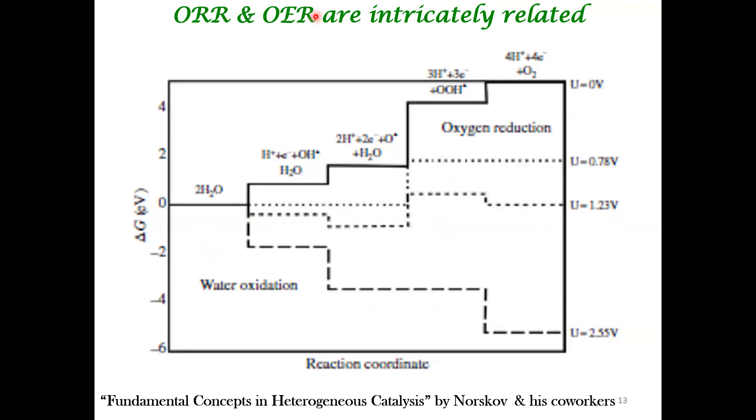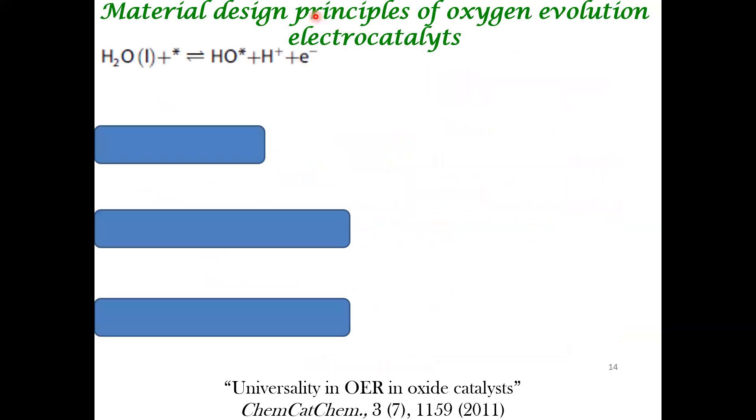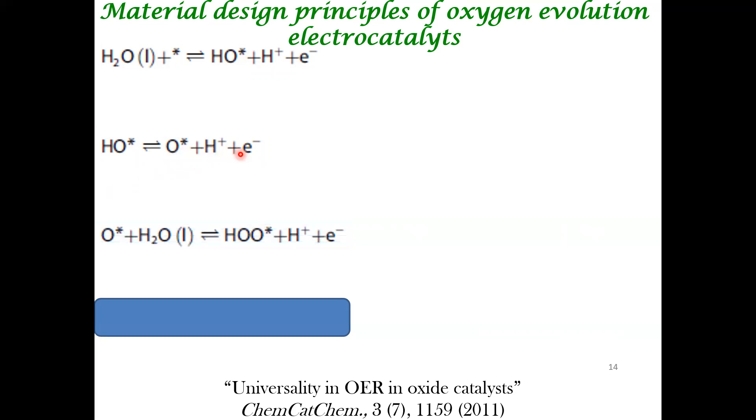Likewise, you can also have a volcano plot for oxygen evolution reaction. The reaction you are considering is water binds to an active site, forms a hydroxyl radical and a proton plus electron. Remember, the chemical potential of proton plus electron can be related to gas-based hydrogen using this computational standard hydrogen electrode. Then in the next step, hydroxyl gives rise to oxygen adsorbate bound to the active site plus proton plus electron. Then in the next step, eventually you form O2.